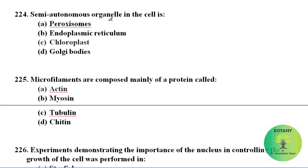The semi-autonomous organelle in the cell is the chloroplast. Chloroplasts are called semi-autonomous organelles because they contain their own DNA and replicate independently of the nucleus.